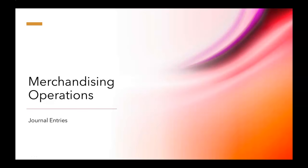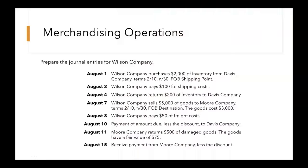Let's review the journal entries for merchandising operations. We have a list of transactions for Wilson Company when they're both the buyer and the seller.